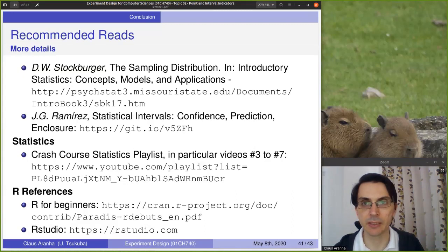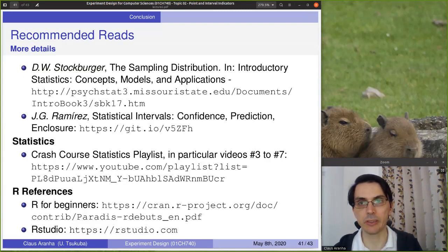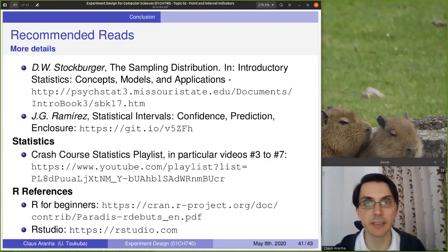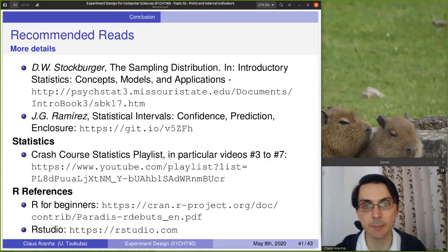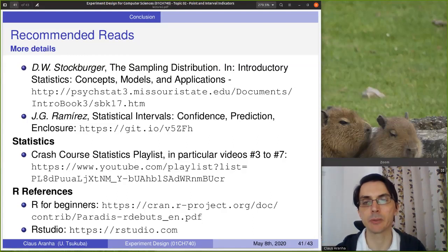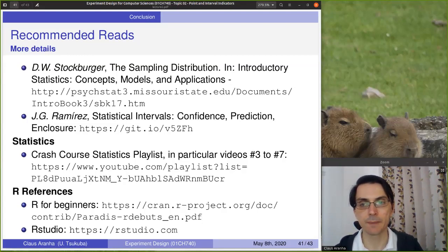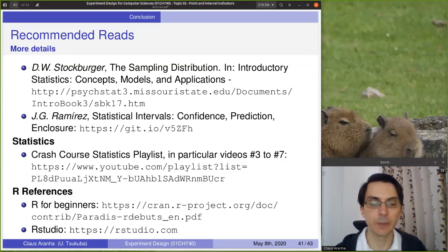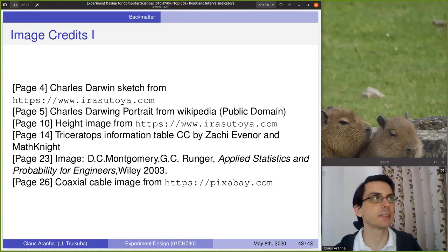There are many recommended reads for this lecture. The first two will give you more detail about sampling distributions — I encourage you to read these; they are not very long. They'll give you more information about sample distribution and statistical intervals. The next link is Crash Course Statistics, a very good video series about these topics, covering different statistics, how you use them, and how you calculate them. In particular, videos three to seven in Crash Course Statistics cover roughly the same topics we talked about today — I highly encourage you to watch each of these videos, it's only about 10 to 15 minutes each. For R, there are two links: R for Beginners that explains how you work with R, and RStudio, the tool you can use to easily run R for your data analysis. Thank you very much for listening, and see you in the next video. Bye-bye.